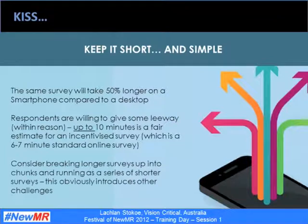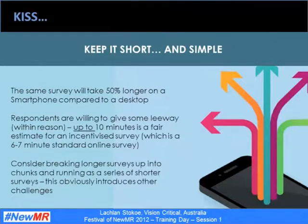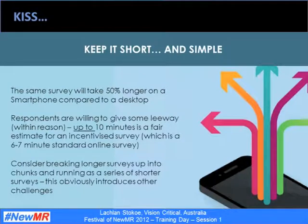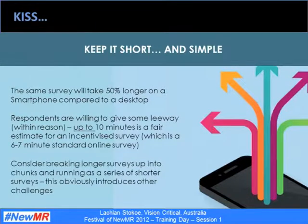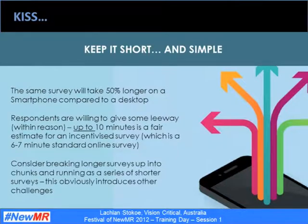If your survey is getting longer than this, you really need to start questioning whether mobile is the right method and consider alternatives. One way we have been experimenting with controlling for length is breaking longer surveys up into chunks and running them as a series of shorter surveys over a period of time. This obviously introduces other challenges such as missing data and requiring larger overall sample sizes. Advanced warning can potentially be used as a way to mitigate dropout risk, but you can't remove that risk completely.